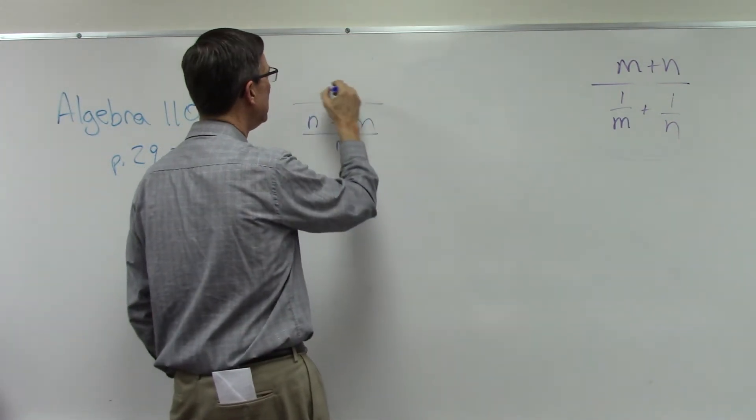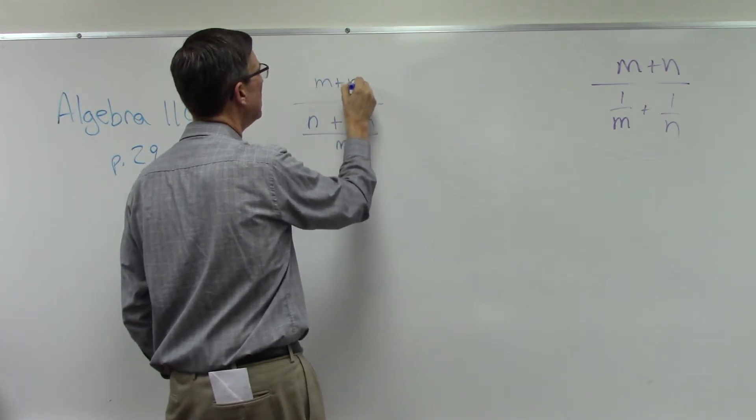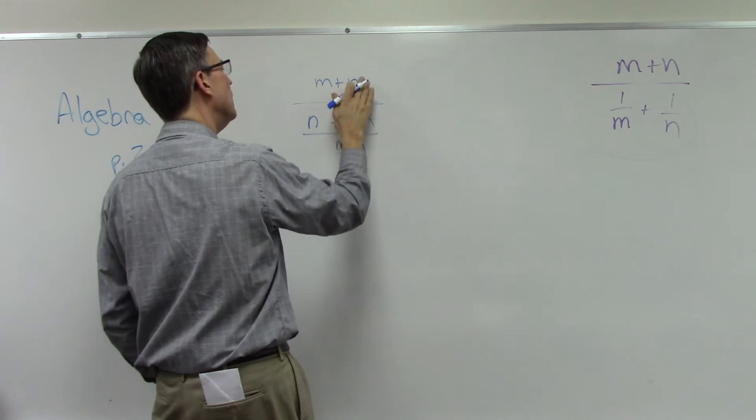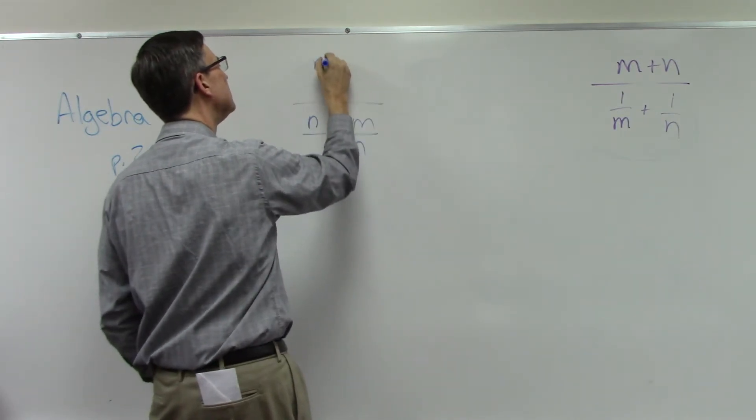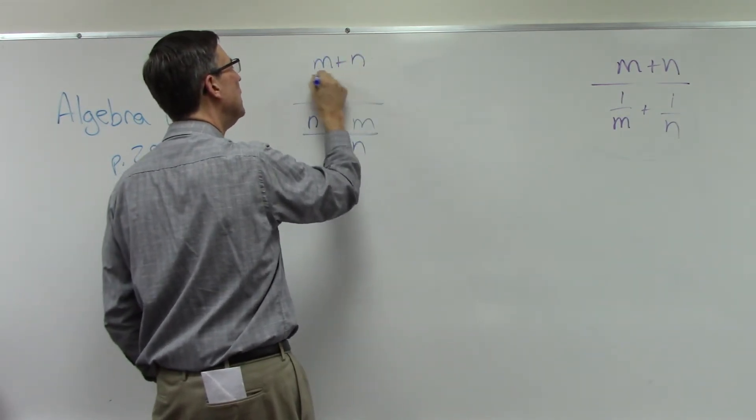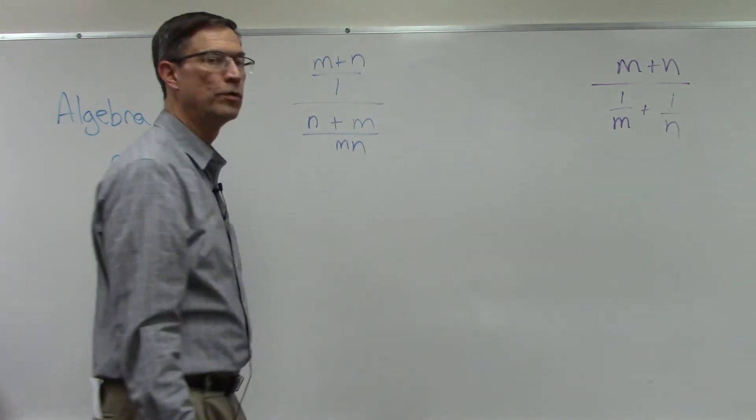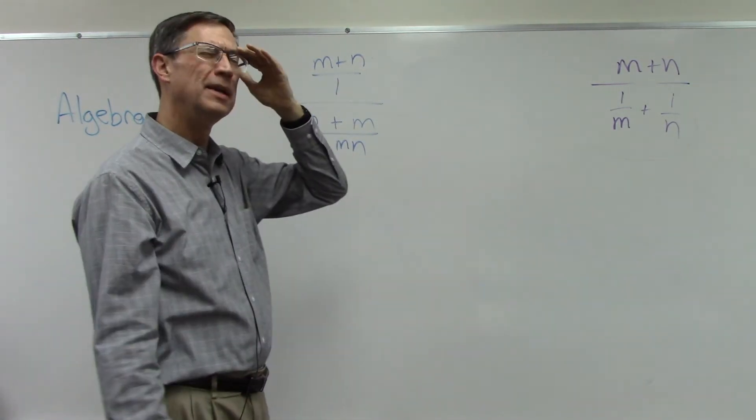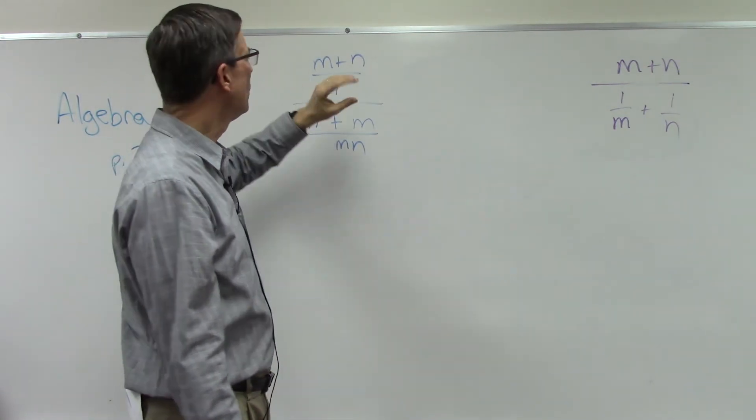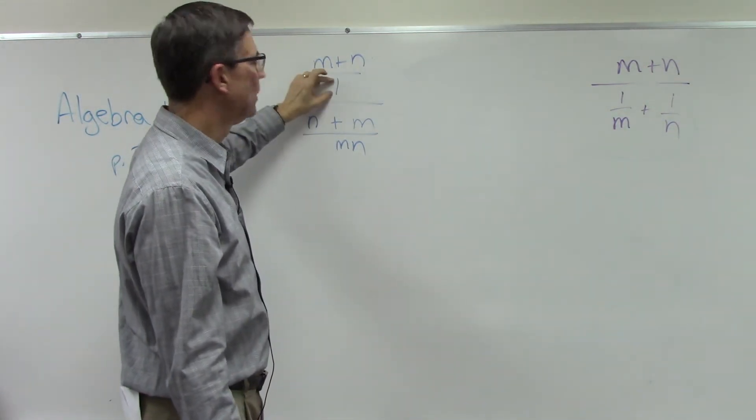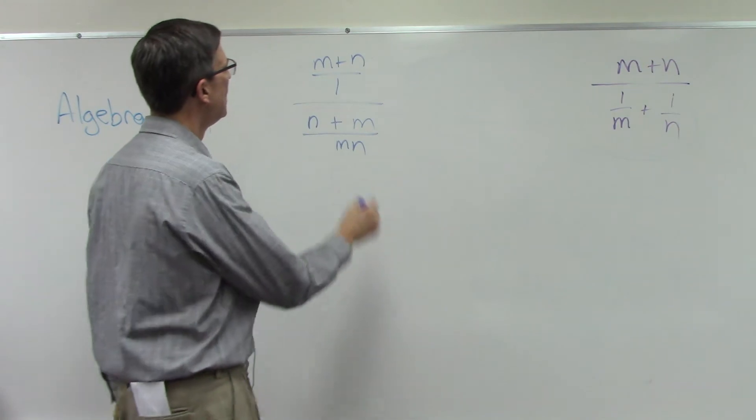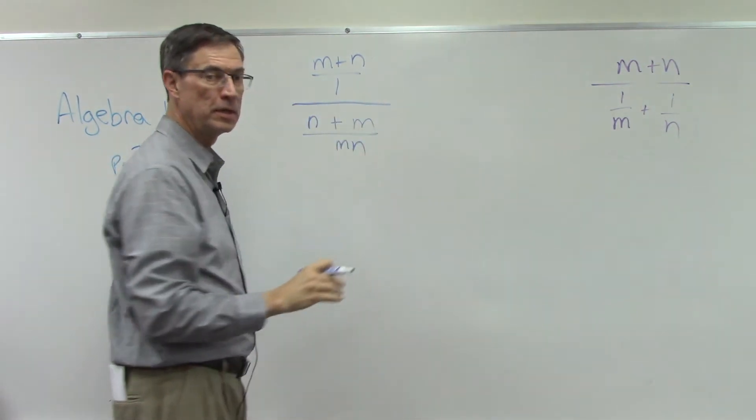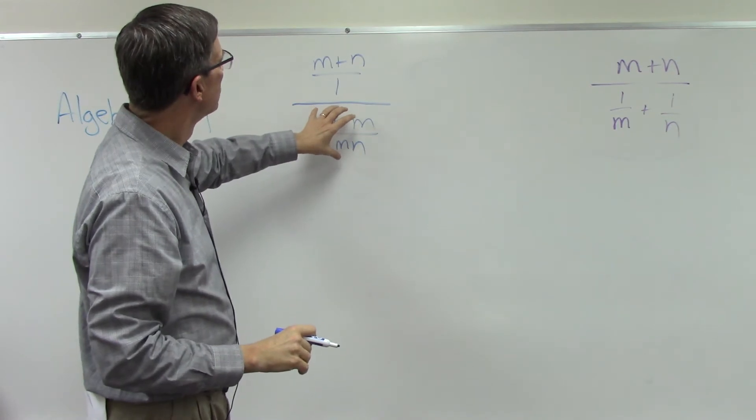So this will become n plus, this one needs an m top and bottom. So plus m all over mn. Now this whole thing is m plus n. I could write this, stay with me here. I could write that as m plus n over 1. The reason I sometimes like to do that is just so that my brain recognizes that, oh yeah, this is like a numerator and the 1 is the denominator and then I'm dividing by this big quantity here.